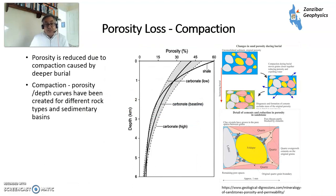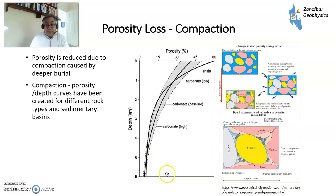Porosity decreases as you bury rocks. As you compact rocks, porosity closes up. Porosity decreases from about the high 30s or 40s at surface to about 5–10% when you're at depths of 4, 5, or 6 kilometers, unless there's something else holding it up. You can get relatively high porosities in the 20s even at 6 kilometers. I worked in a North Sea oil field called Franklin and looked at some of the core from that — buried at nearly 6 kilometers, it had nearly 20% porosity in some of the rocks because this was preserved by overpressure.